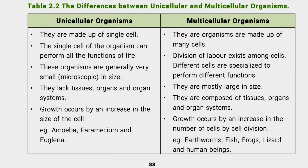Unicellular organisms are very small in size, usually microscopic. Multicellular organisms are large, having tissues, organs, and organ systems. In unicellular organisms, growth occurs by increase in the size of the cell. In multicellular organisms, growth occurs by increase in the number of cells through cell division.